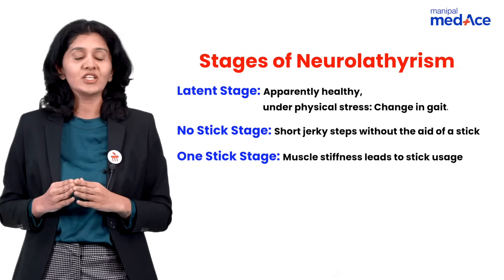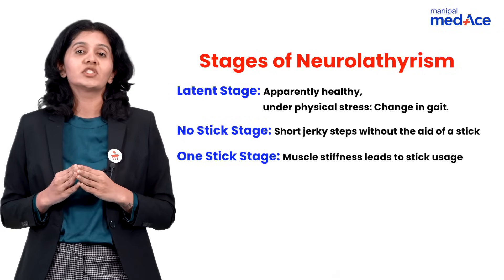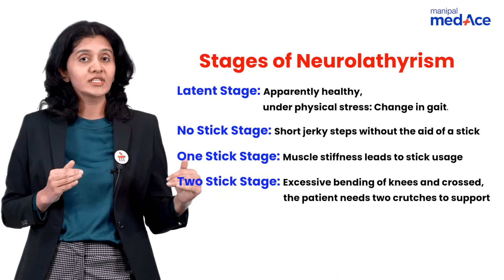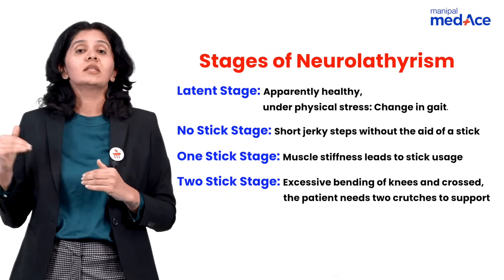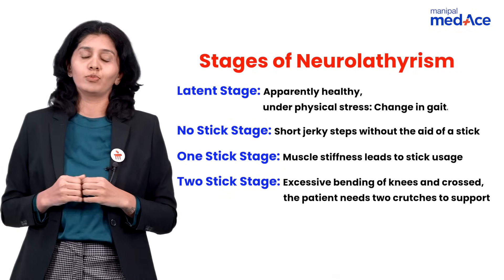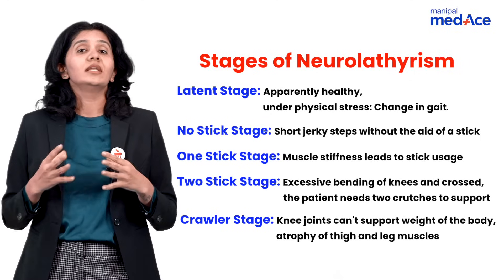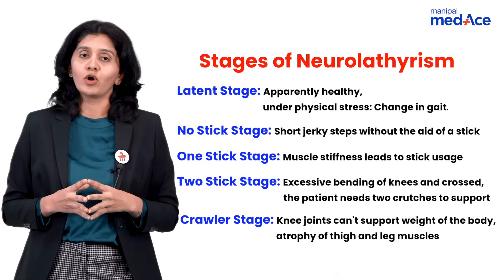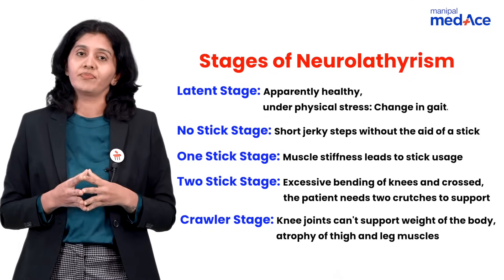The third is the one-stick stage, where because of muscle stiffness the patient starts using one stick. The fourth is the two-stick stage, where because of bending at the knees the patient starts using two crutches for support. The fifth is the crawler stage, where the knees cannot support the body and the patient starts crawling.